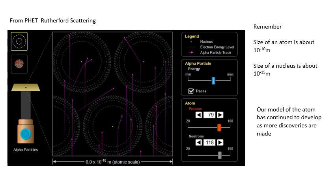And our model of the atom has continued to develop. People like Niels Bohr, and then Schrodinger and Heisenberg and people after that - our model of the atom is continuing to develop as more discoveries are made, as new models are needed.